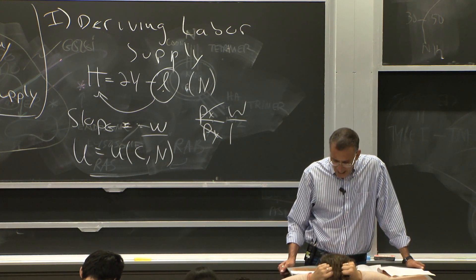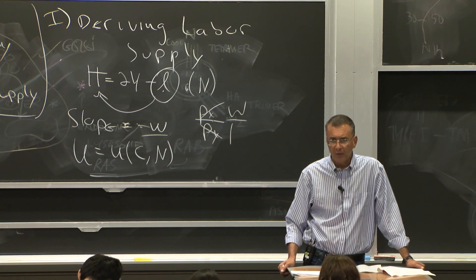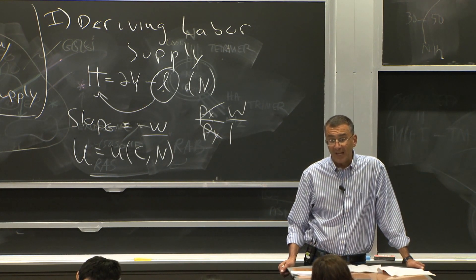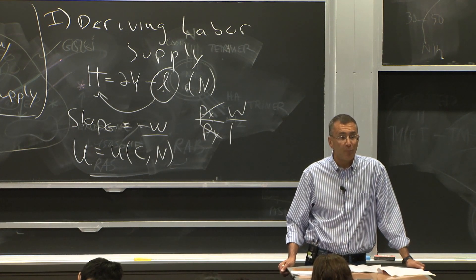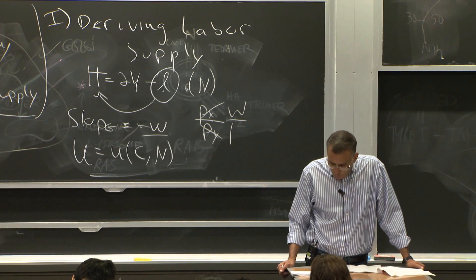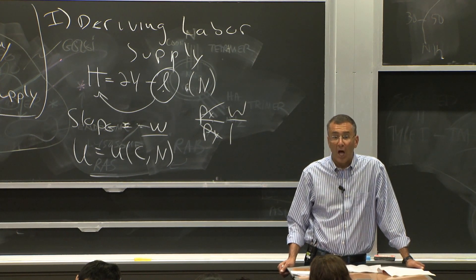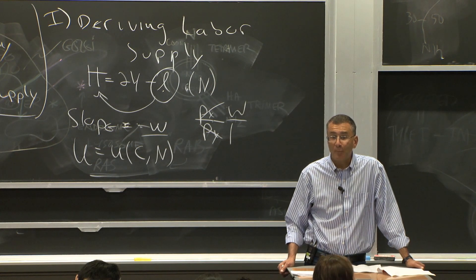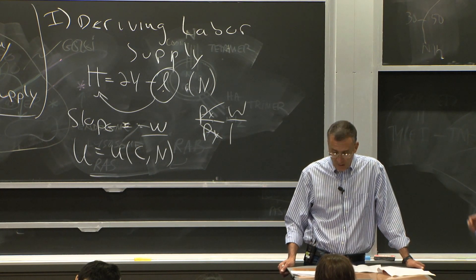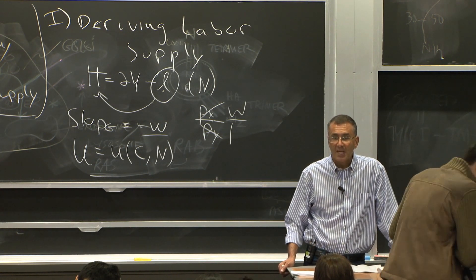Individuals are choosing to take N1 hours of leisure, therefore 24 minus N1 hours of work, and consume C1. See that at point A. Now let's imagine the wage rate goes up. The wage rate goes up. So the slope steepens. The wage rate goes up. This is a steeper slope now of this budget constraint.